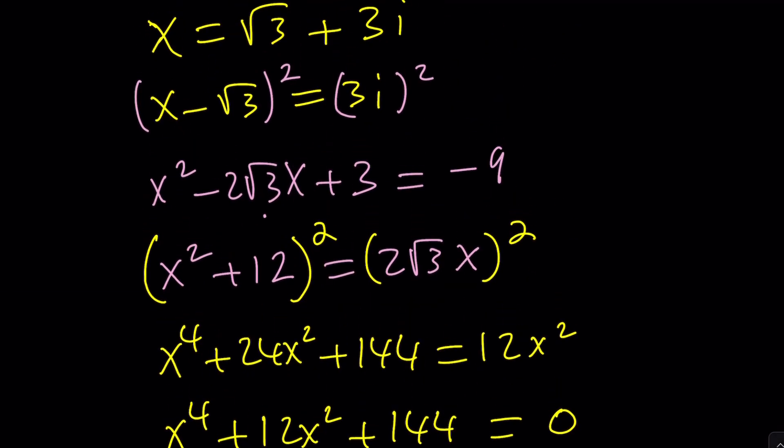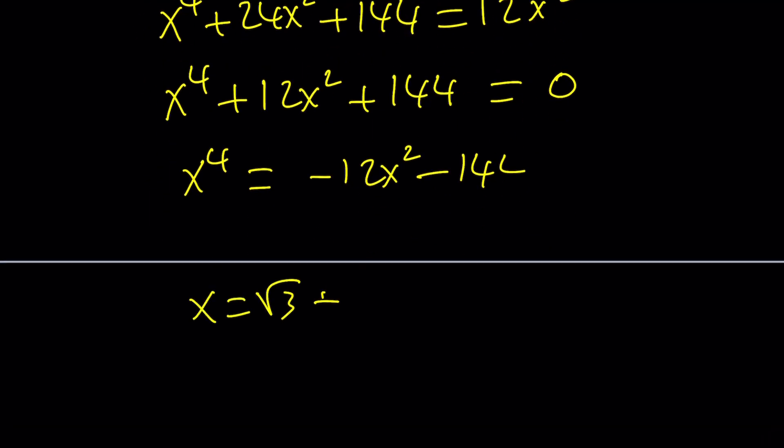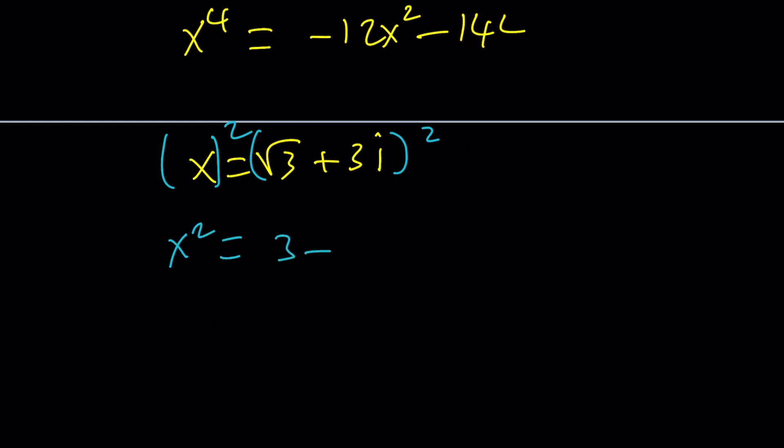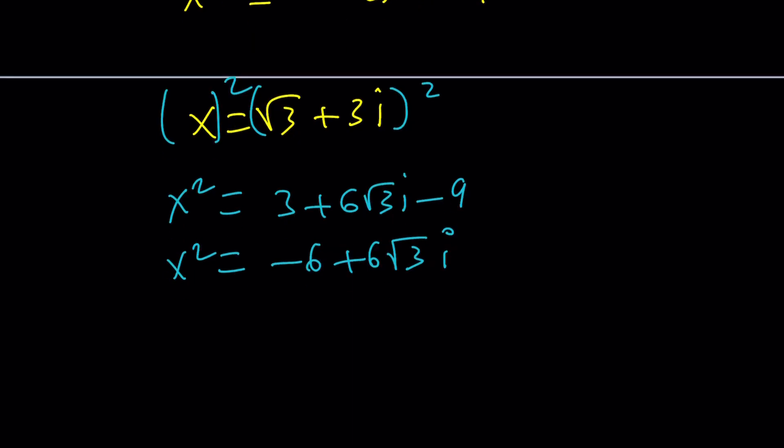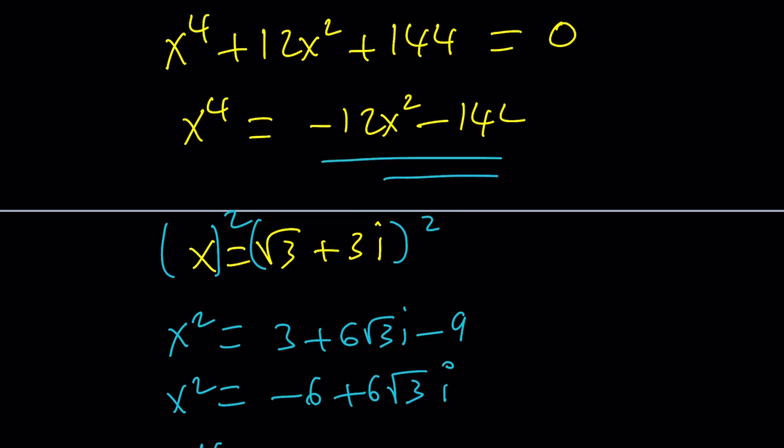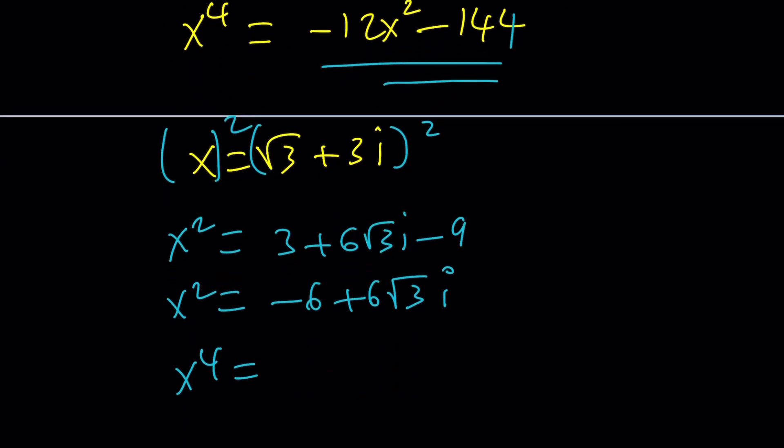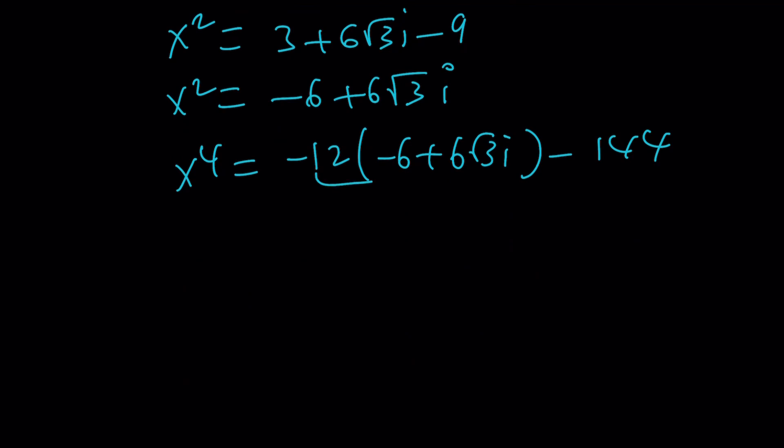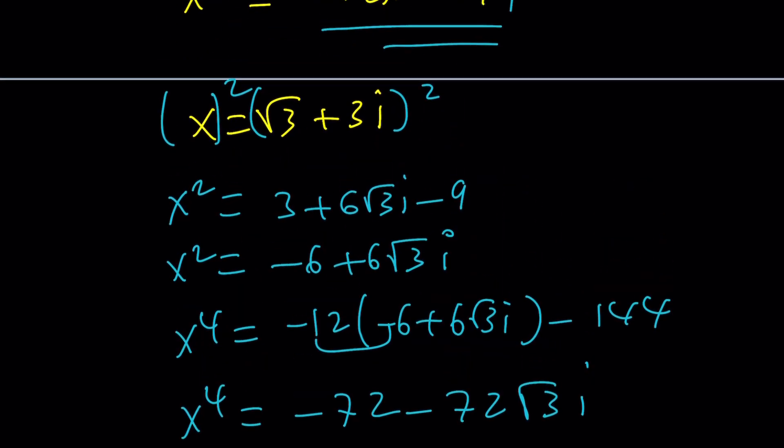The 4th power was written as a square, so I could just square it. Let's square x, which is root 3 plus 3i. Squaring both sides, that's going to become x squared equals 3 plus 6 root 3i minus 9. Then x squared is just going to be negative 6 plus 6 root 3i. I can find x to the 4th easily because I know x to the 4th can be written like this. I can plug it in: negative 12 times this minus 144. This gives me positive 72 and negative 72 root 3i.